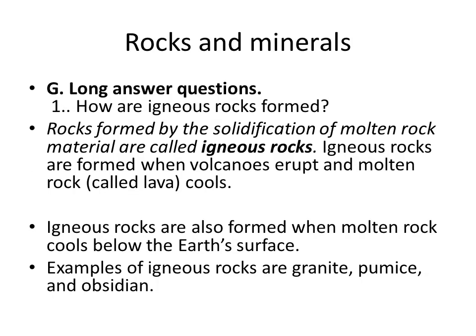Long question answers. Question one: how are igneous rocks formed? Igneous rocks are formed by the solidification of molten rock. When a volcano erupts, the molten lava cools down. When molten lava cools below the earth's surface, igneous rocks are formed. Examples: granite, pumice, and obsidian.